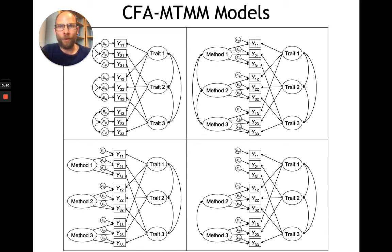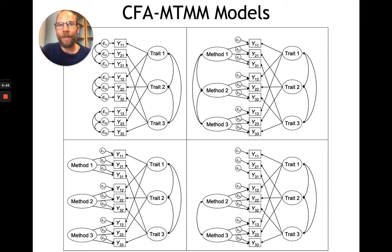What are these models good for? These models are used in research designs that use multiple reporters or other methods as sources for examining different traits or different constructs. The purpose of this is to find out about convergent validity or agreement between different raters and different methods for different traits, and also to study discriminant validity between different constructs. This approach was originally proposed by Campbell and Fiske, who in 1959 published a very influential article on the multi-trait, multi-method matrix in the journal Psychological Bulletin.